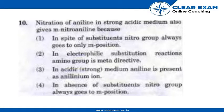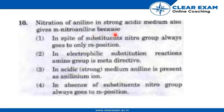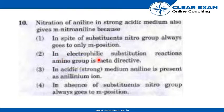Let's see question number 10. Nitration of aniline in strong acidic medium also gives meta-nitroaniline because, in spite of substituents, the nitro group always goes to the meta position. In electrophilic substitution reaction, the amino group is metadirective.